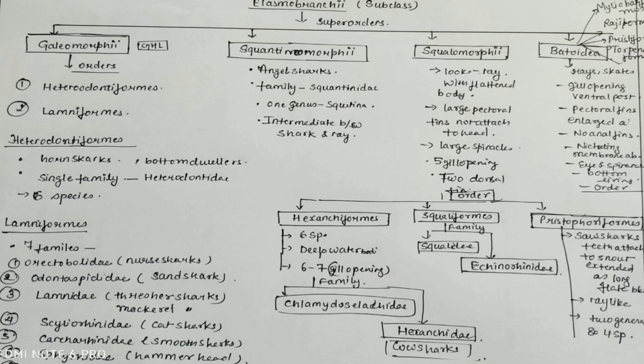Squaliformes are divided into two families: Squalidae and Echinorhinidae. Pristiophoriformes are classified as saw sharks. The teeth are attached to the snout extended as long flat, and they are ray-like, they are flat. Four species are there.